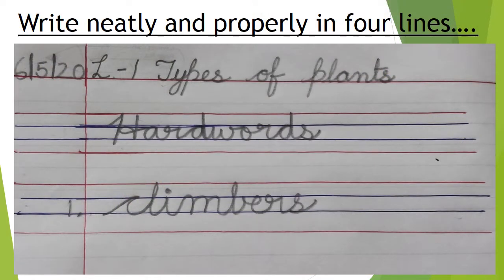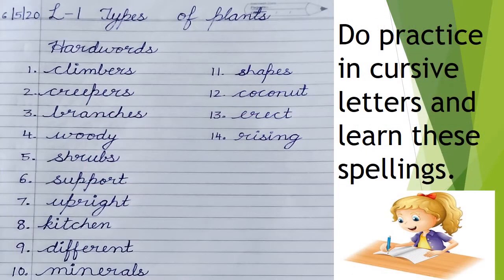Now this is an example of how to write in four lines, children. You have to write neatly and properly in a line. Touch the line while you are writing. Now all these spellings are in cursive letters, children. Once again, I am going to read them for you.